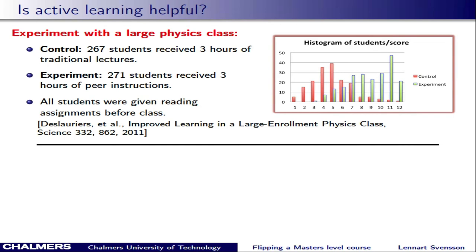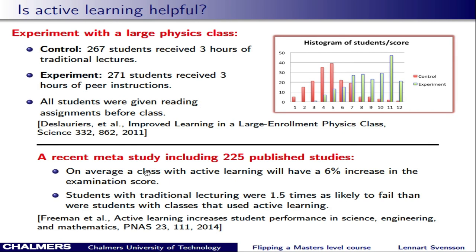An obvious question is whether active learning is any good and worth the effort. One study published in 2011 involved a short one-week evaluation with a large class of roughly 500 students divided into two groups. Both groups read material before class, but the experiment group was also given questions to answer. In class, the control group received a traditional lecture while the other group participated in peer instruction. After three one-hour classes, the experiment group performed substantially better on a test. There are many studies supporting these conclusions, including a large meta-analysis published in 2014 that shows active learning generally increases learning.